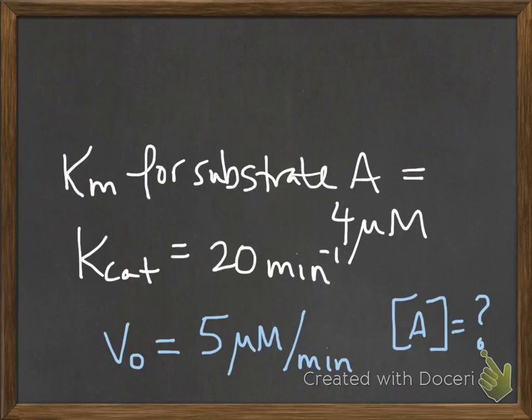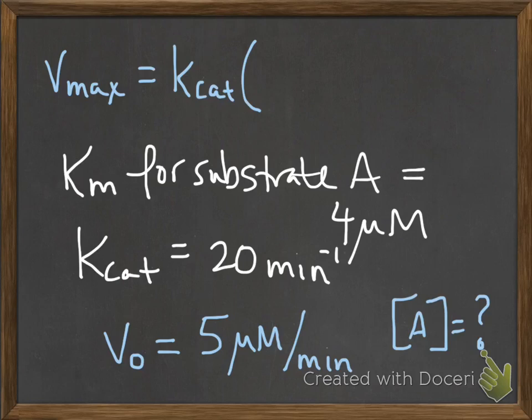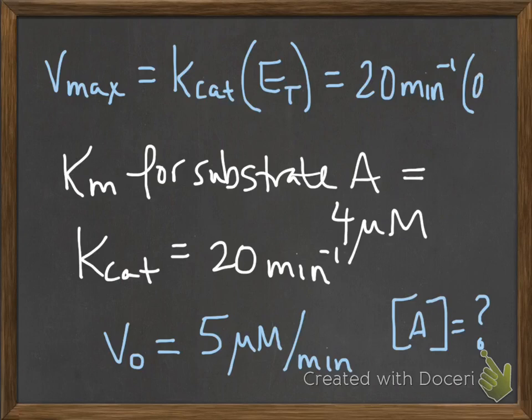So at this total enzyme concentration, if you were to calculate Vmax, it would be Kcat times total enzymes. So it would be 20 per minute times 0.5 micromolar. You multiply 20 times 0.5, and you will get 10 micromolar per minute.